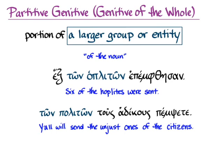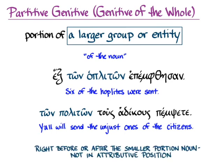The partitive genitive is going to appear right before or after the smaller portion noun — in these two instances, hex or tus adikus — and it won't be in attributive position. You'll find genitives of possession in attributive position and genitives of quality in attributive position, but not the genitive of the whole or the partitive genitive.